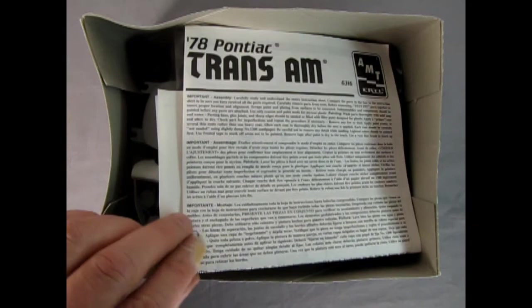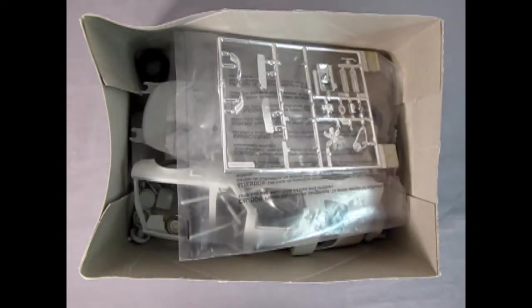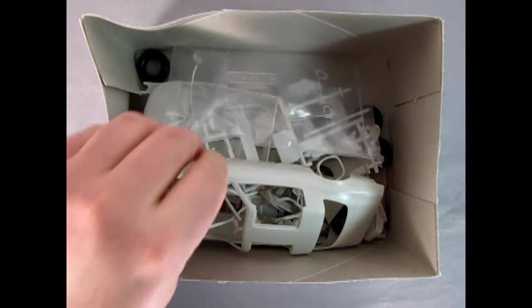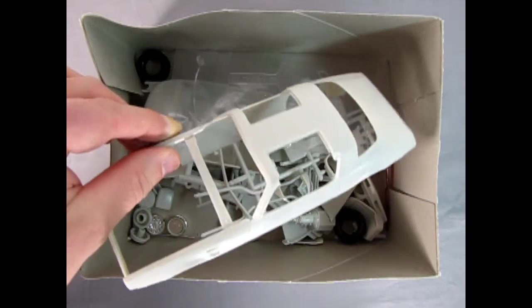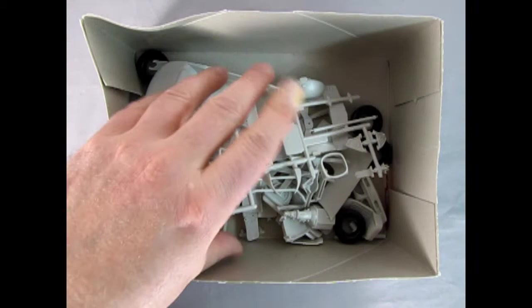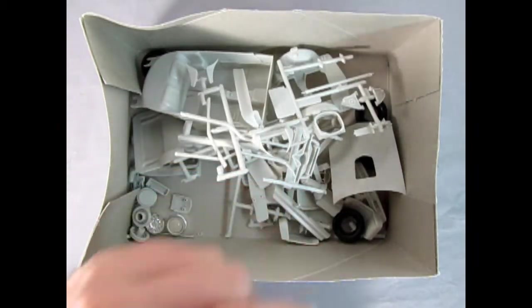Here right away we get our nice Trans Am instruction sheet as well as the decals which we'll take a look at at the end of the video. Our chrome parts tree in a bag. Now I do believe we were working on this model, but there is the body and then our glass in a bag as well, and then all the plastic components down here as well as the wheels and tires in the corner.